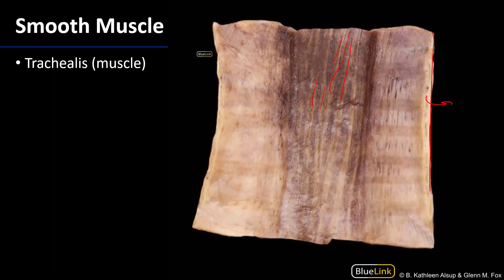The trachealis is under autonomic control. There isn't a great deal of control of the airway here — that's done at the level of the bronchioles, where there is much more smooth muscle relative to cartilage. But there is some smooth muscle here to control the patency of the airway, and it is autonomically innervated. Parasympathetically, there is more tone to the smooth muscle; sympathetically, there is less tone. So during a sympathetic response, the smooth muscle of the wall of the airway relaxes to allow it to be more patent, aiding in ventilation.